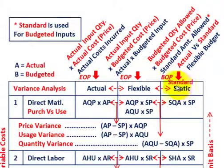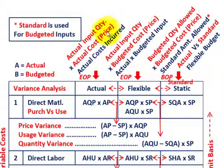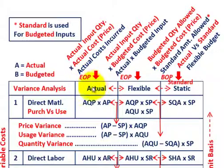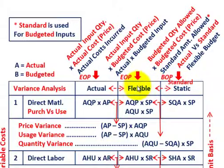At the beginning of the period we establish our standard or static amount. At the end of the period our actual results come in — actual input quantities times the actual cost or price. For our flexible amount, we take the actual input quantities from the end of the period and multiply by the budgeted cost or price established at the beginning. So now we can do variance analysis between actual, flexible, and static amounts.